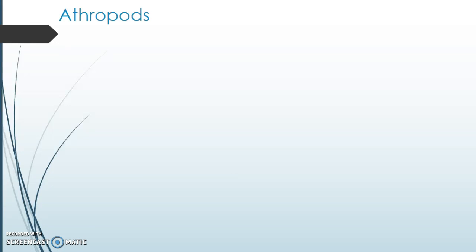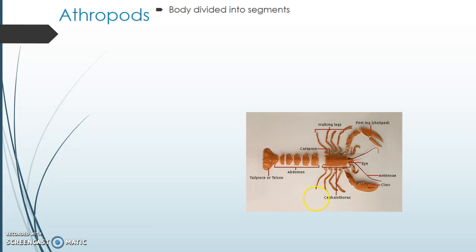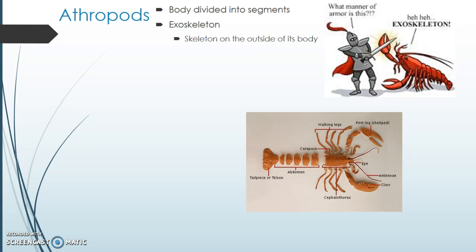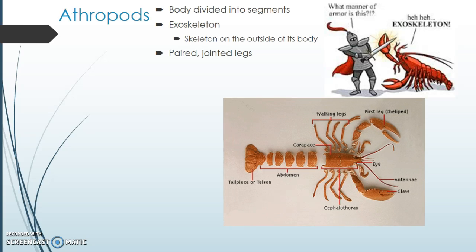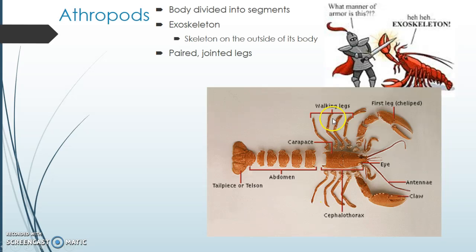I think this is our last group of what would be considered an invertebrate before we move on to the old-fashioned group of vertebrates, and it's arthropods. Arthropods are animals that have their bodies divided into segments — here's an example; you can see lots and lots of segments making up this crayfish. They have an exoskeleton — a skeleton on the outside of the body that helps protect it from predation. They have paired and jointed legs; when we zoom in we can see that each leg comes in pairs and they've got lots and lots of joints going along them.